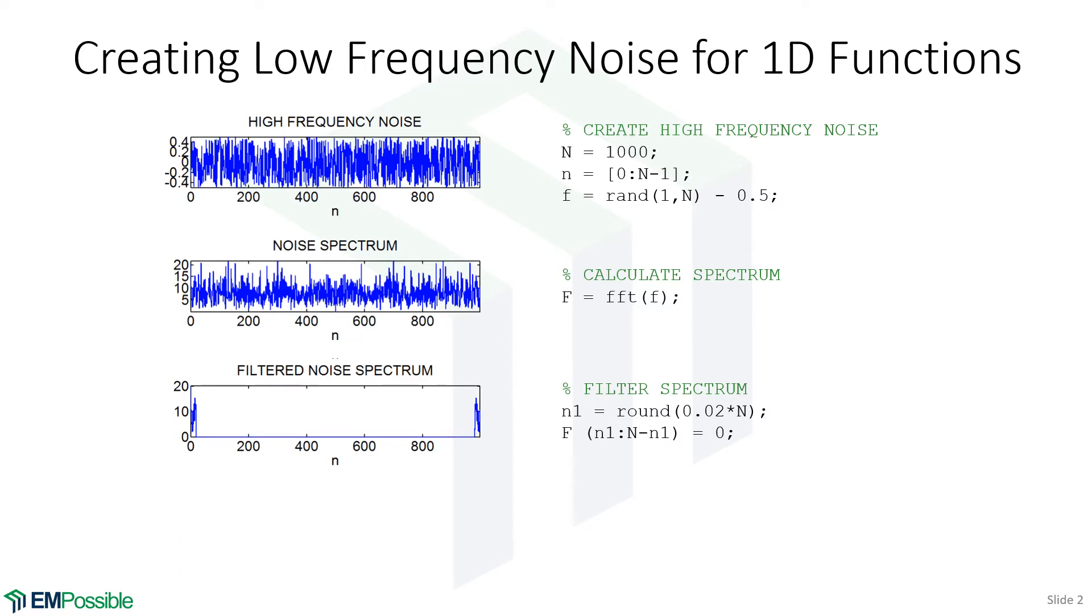Okay. So I now have my filtered spectrum. This F is my filtered spectrum. Then I inverse FFT that and just throw out the imaginary part. Just take the real part. This is now my filtered signal. And now what I see is this nice, beautiful sort of low frequency noise. And I can control how abrupt that is through this number 0.02.